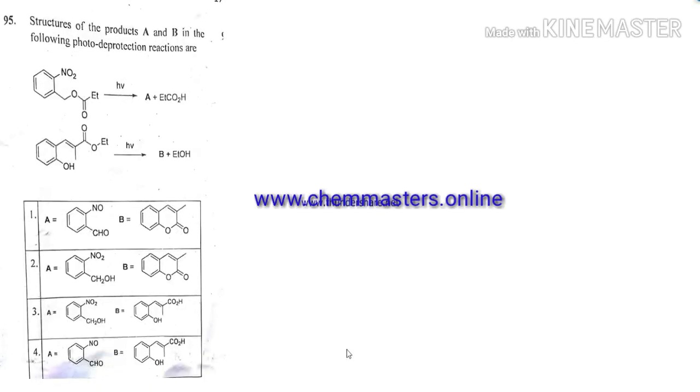Hello guys, now we are analyzing CSIR NET organic chemistry problem from June 2019 chemical sciences. Just look at the given problem here. We are going to give the correct products by step-by-step mechanism, so just watch the video completely. The structures of the products A and B in the following photo deprotection reactions are given.